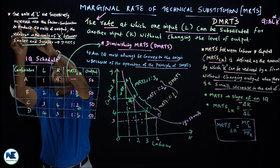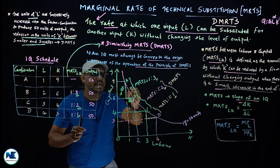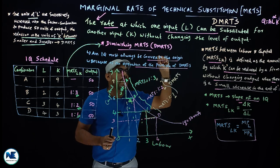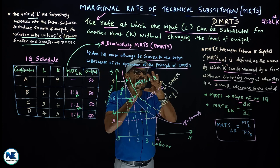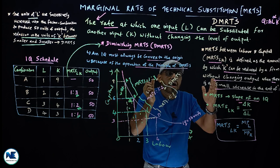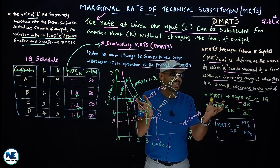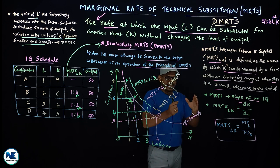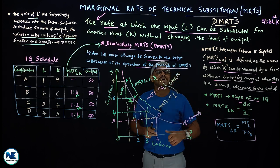The units of labor are successively increased to produce 50 units of output, and the reduction in capital becomes smaller and smaller. This is why an isoquant must always be convex to the origin. Diminishing marginal rate of technical substitution is the crucial reason for this convexity. In the coming videos we will discuss types of isoquants and properties of isoquants. Happy learning, thank you.